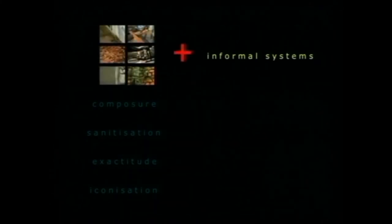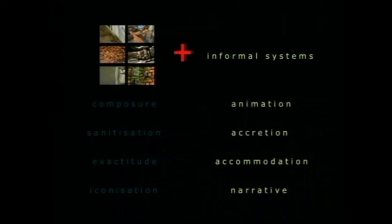Informal systems, as opposed to being dilutions of formal systems, are actually their own thing. The kicker is this: whenever you want to see change in the world, whenever change happens by evolution or by intent, it's because something happens with the informal system. Specific context asks a question of that informal system, which then becomes formalized. I found in architecture that combination results in a series of four different ideas: composure and animation, sanitization and accretion, exactitude and accommodation, and iconization and narrative.